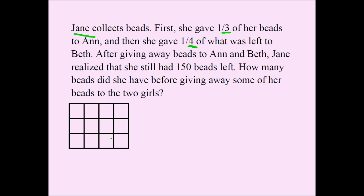Once you get that, you can say that Jane gave away this much to Anne, because that's one-third. One-third, two-thirds, three-thirds — that's all of her beads. So that's one-third given to Anne.